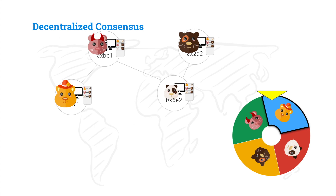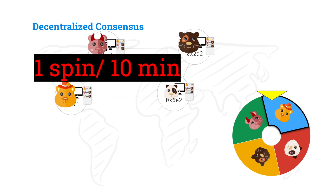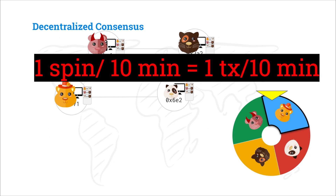So this is pretty straightforward, right? But is this censorship resistant? Is this reversion resistant? And is this scalable — does this actually work in practice? If we're doing one of these rounds per 10 minutes because we want all of the messages to finish propagating before we start a new round, that gives us one transaction every 10 minutes. It's pretty clear that that is unusable in any setting.